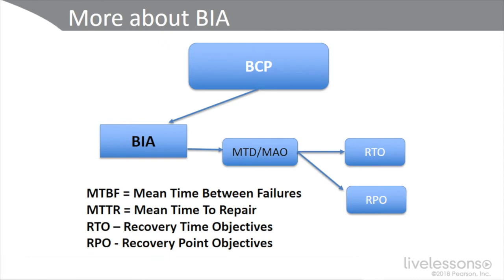Let's talk more about the Business Impact Analysis, which involves several types of metrics you'll need to know for the exam. The BIA determines the MTD — Maximum Tolerable Downtime — also referred to as MAO, Maximum Acceptable Outage. This will be based on individual systems, applications, and services — essentially an elaborate spreadsheet on a scenario-by-scenario or event-by-event basis. If an outage lasts longer than the MTD, it will definitely negatively affect your business operations and continuity of operations.